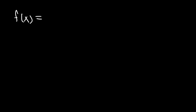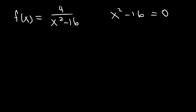Now let's look at another example. Find the vertical asymptotes of this function: 4 divided by x squared minus 16. Sometimes you may need to factor the expression. So we could set x squared minus 16 equal to 0. To factor it, we could use the difference of squares method. It's going to be x plus 4 times x minus 4.